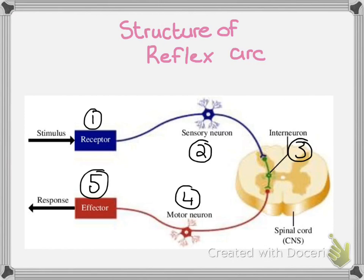You will also note that below the diagram, it mentions reflex centers, and there are two: your brain and your spinal cord. Your brain is responsible for reflexes such as sneezing, breathing, and blinking. Whereas your spinal cord is linked to your primitive reflexes, like your knee-jerk reaction or withdrawal from a painful stimulus.